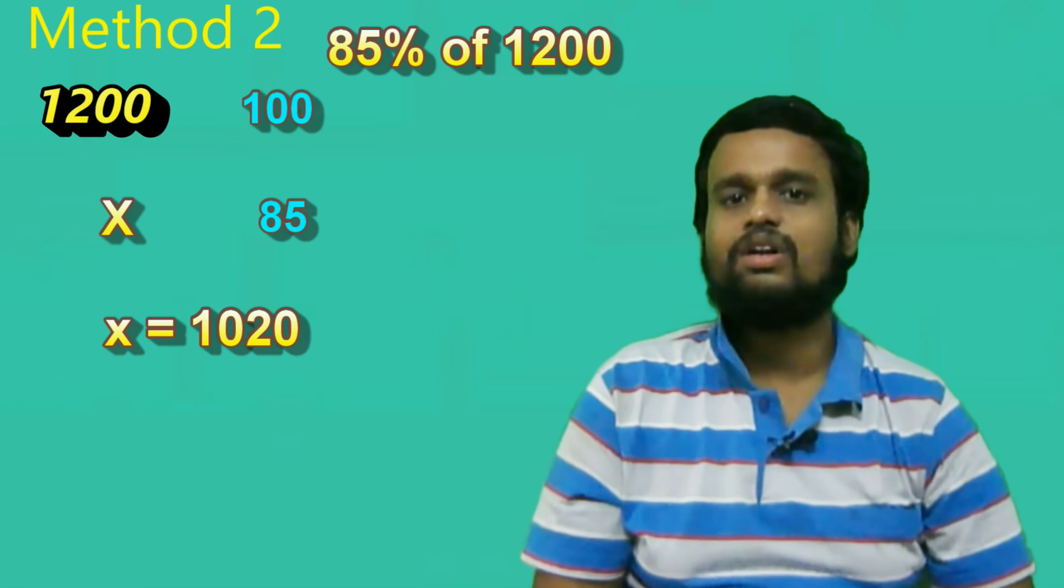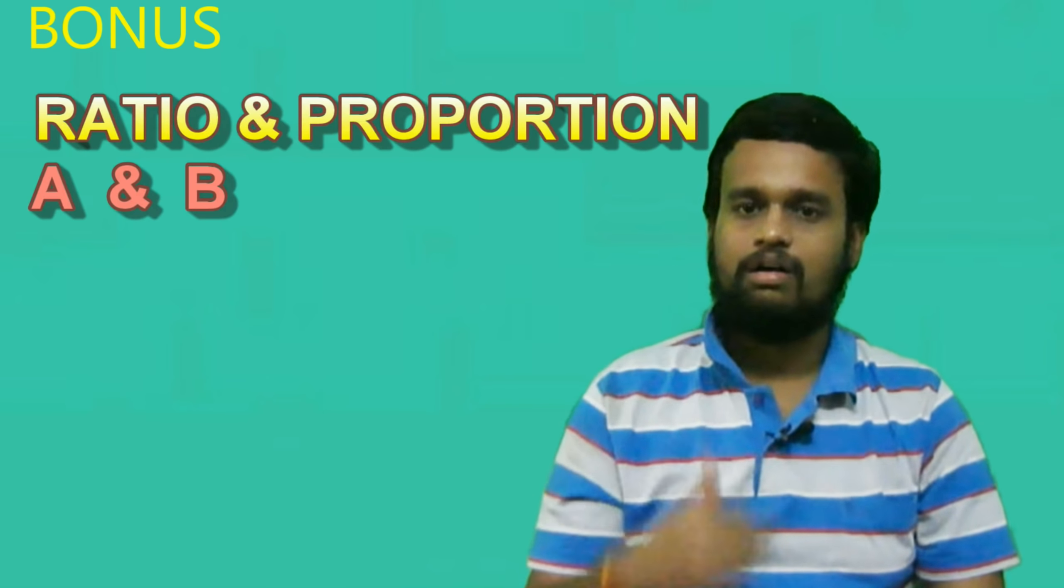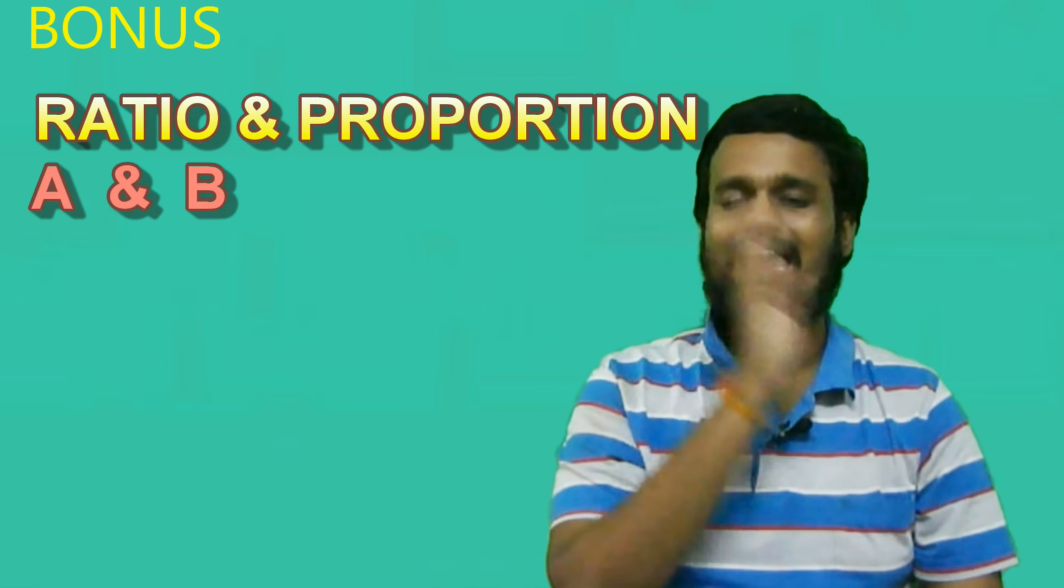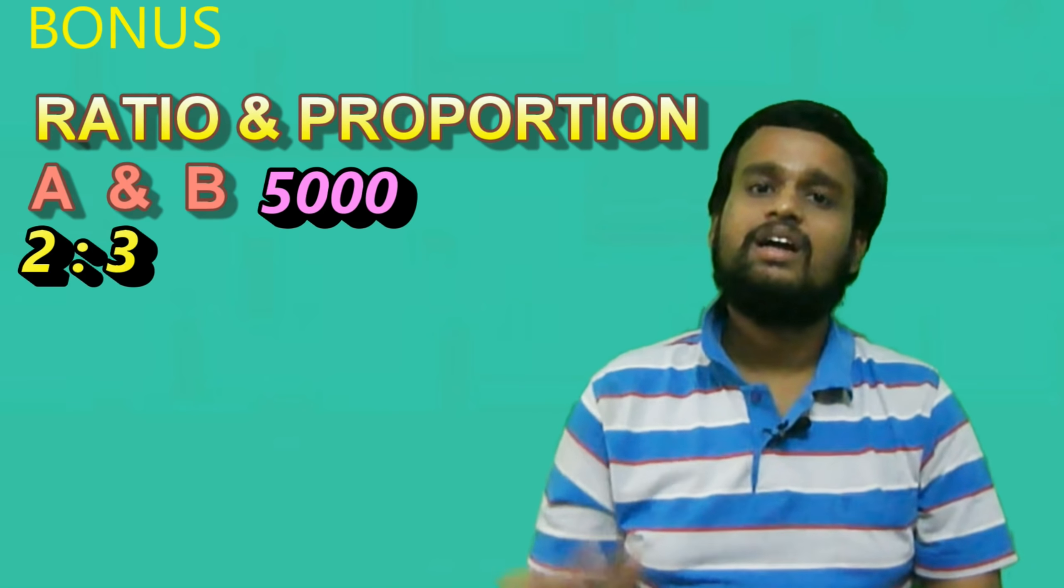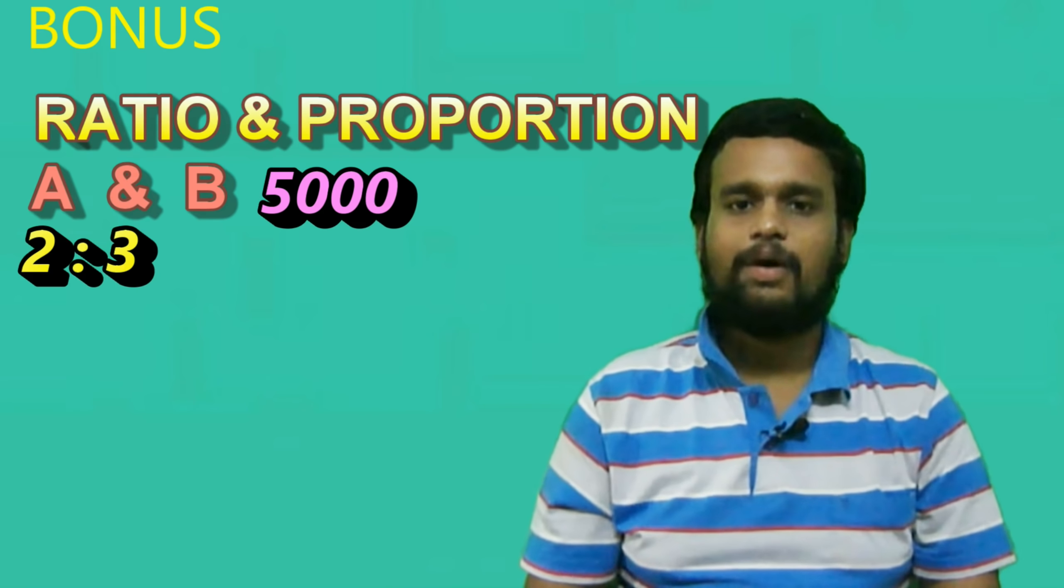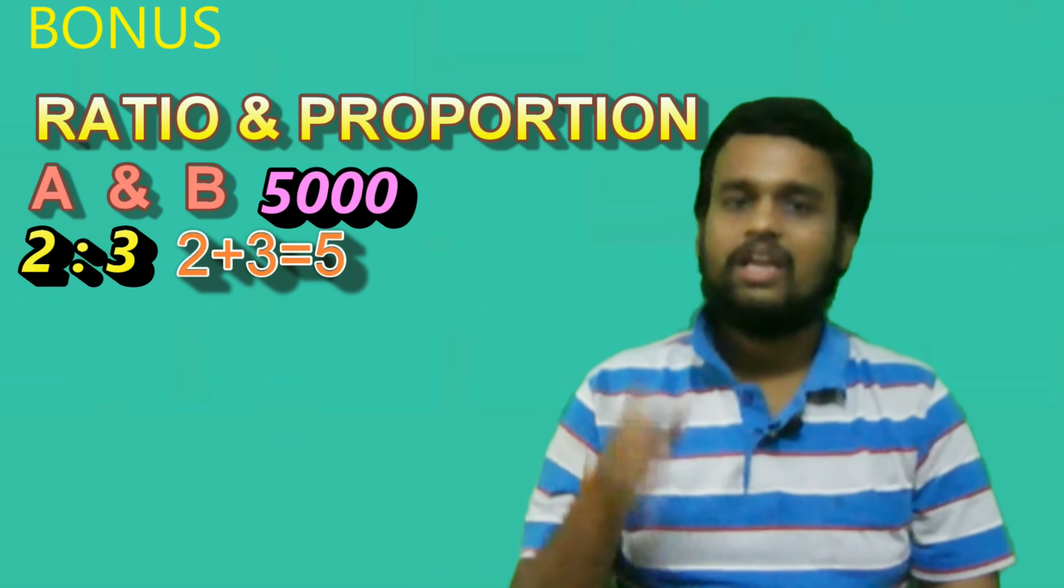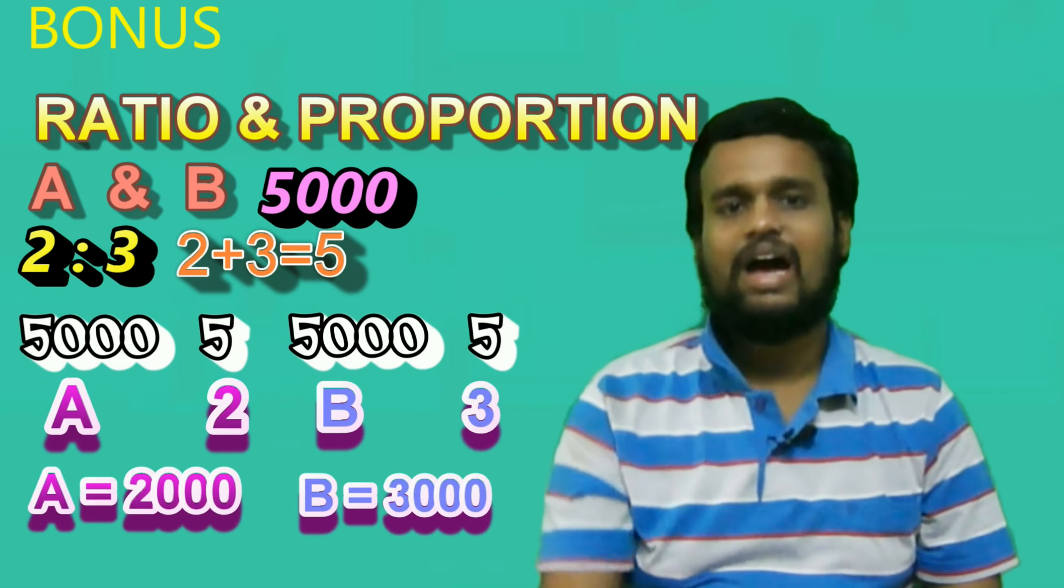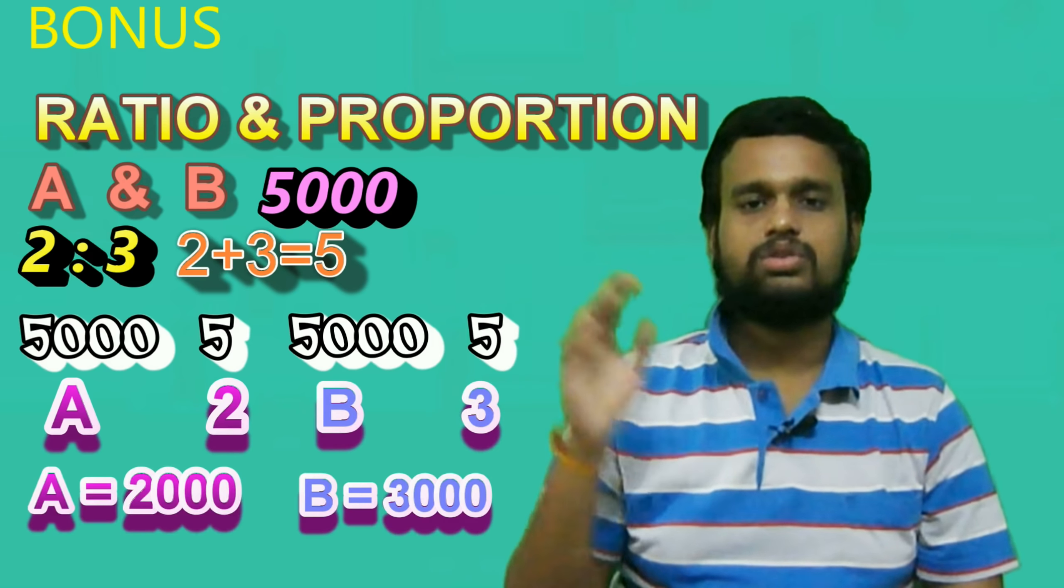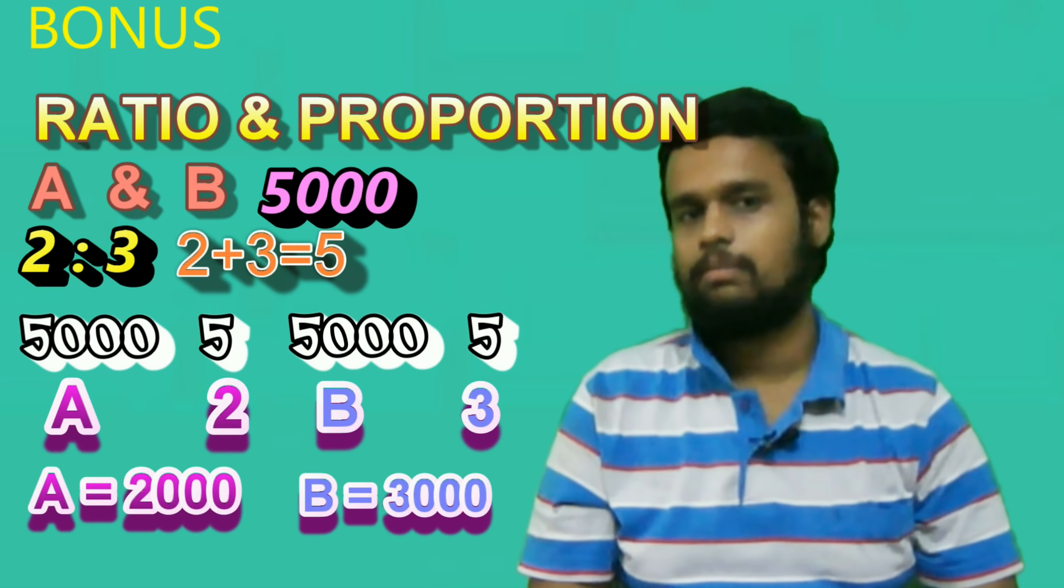Now for the bonus. We can use this method for ratio and proportion. For example, A and B share 5000 rupees in the ratio 2 to 3. How much does each get? We write the ratio as 2:3. When we add these, 2 plus 3 equals 5, and this 5 represents 5000 rupees. So if 5 represents 5000, then 2 represents 2000 and 3 represents 3000. A gets 2000 and B gets 3000. It's very easy.